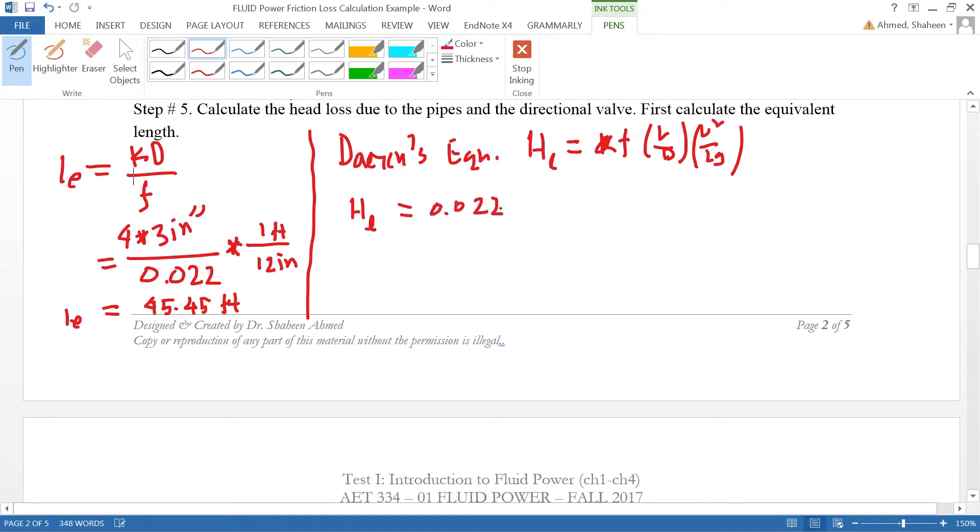.022 times the total length - the pipe is 120 feet plus the equivalent length of 45 feet which has equivalent loss to the directional valve. Then divide by 3 inch diameter. The numerator is in feet, the denominator is in inches, so we have to convert that.